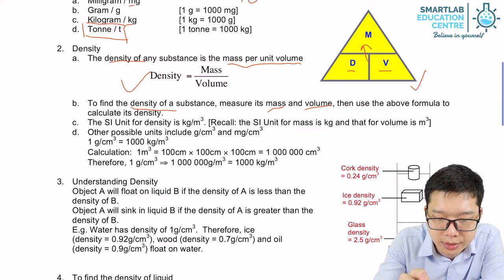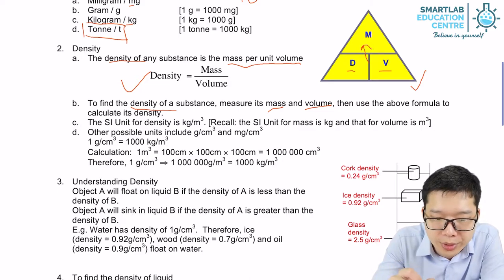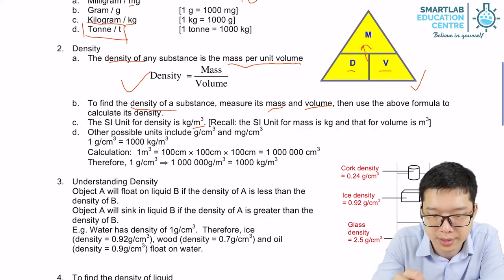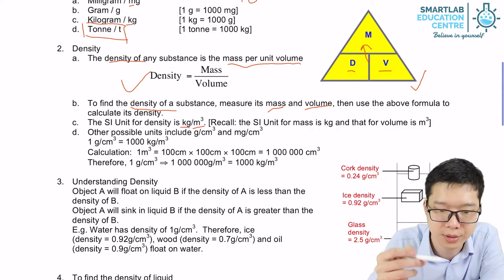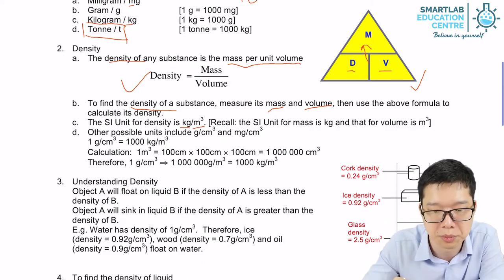Since we know that the SI unit for volume is meter cube, the SI unit for mass is kg. So the SI unit for density is kg per meter cube.